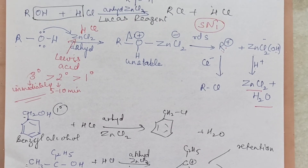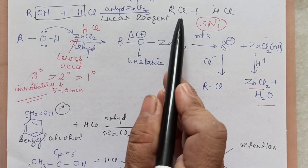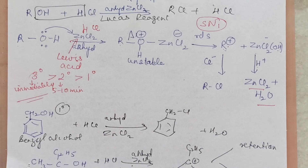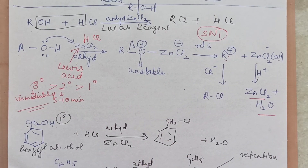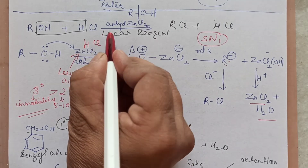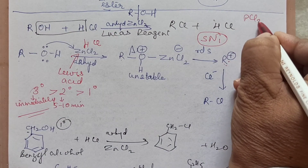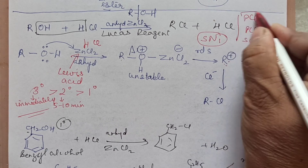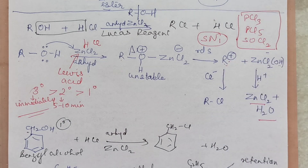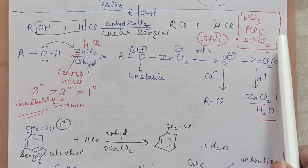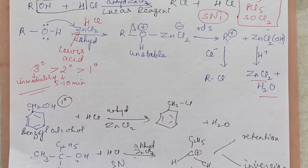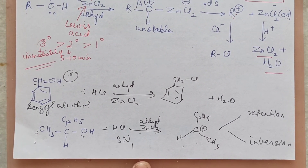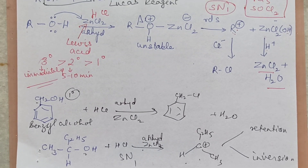You should know how to apply SN1 and SN2 mechanisms. Alkyl halides from alcohols can also be prepared using other halogenating agents: PCl3, PCl5, or thionyl chloride. All these reactions with their mechanisms have been discussed in the haloalkane/haloarene chapter — please watch that video to understand these.